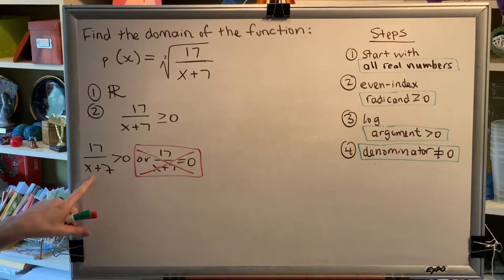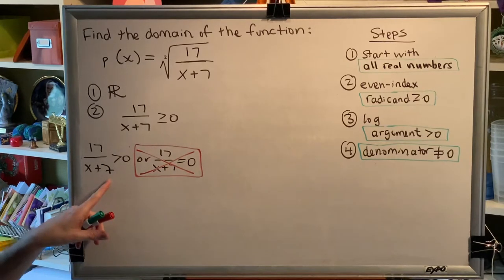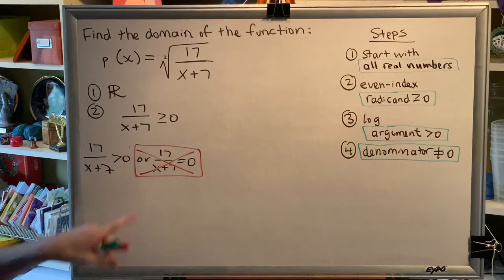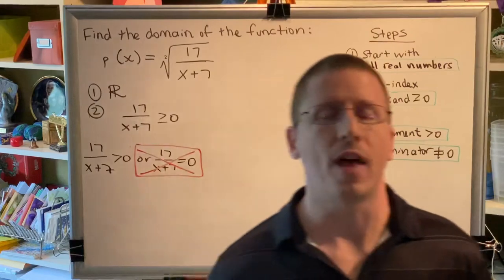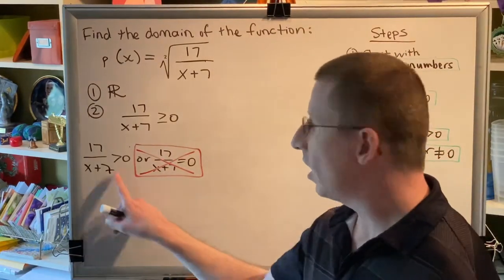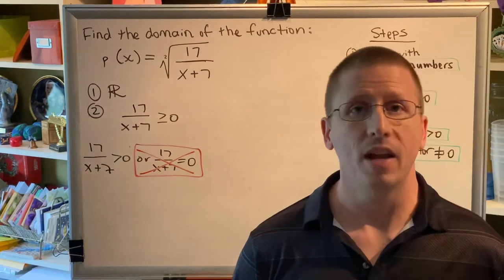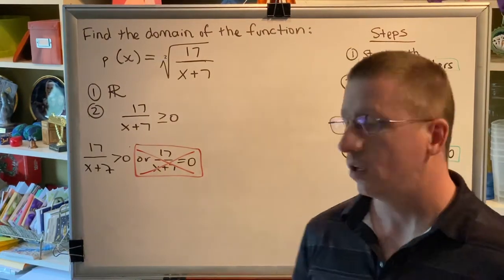But what is part of our solution to this problem is this inequality. Now, this inequality has the variable x in the denominator. The most common mistake that students make when they solve a problem of this type is they try to multiply both sides by x plus 7. Here's why we can't do that. We're dealing with an inequality. When you multiply or divide an inequality on both sides by a negative, you have to flip the direction of the symbol, or the sign.